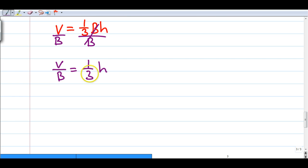Now I want to clear the 1 third. That 1 third is a fraction multiplying to the H. Because it's a fraction, to clear it, I'm going to multiply by its inverse. So I'm going to multiply both sides by 3 over 1.